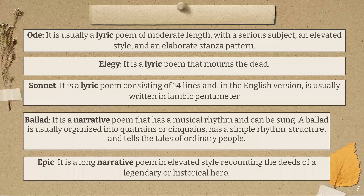An elegy is a lyric poem that mourns the dead — not to be confused with geology. It can have a fairly formal style and sound similar to an ode. A sonnet is a lyric poem consisting of 14 lines, and in the English version it is usually written in iambic pentameter. There are two basic kinds of sonnets: the Italian sonnet and the Shakespearean sonnet.